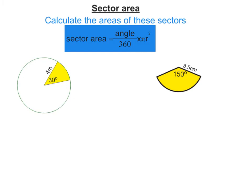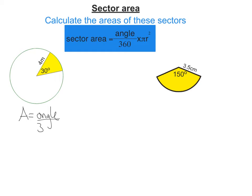Let's work out the area of this first shape here. It's a formula question, so the first thing I always write down is my formula. A equals angle over 360 times pi r squared.